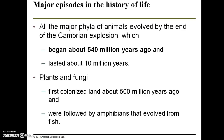All the major phyla of animals evolved by the end of the Cambrian explosion. By explosion here, we're not talking about some catastrophic event — it just refers to a rapid diversification of species, an explosion of life or an adaptive radiation. The Cambrian explosion began about 540 million years ago and lasted about 10 million years. Plants and fungi first colonized land about 500 million years ago, and were followed by amphibians that evolved from fish.